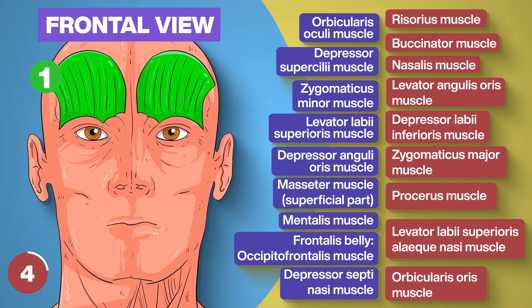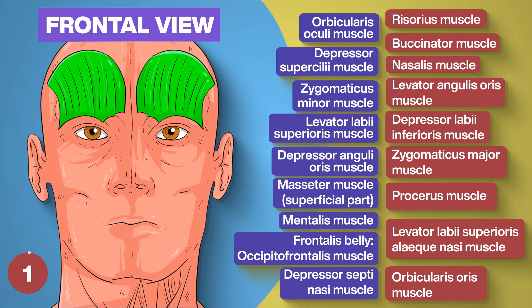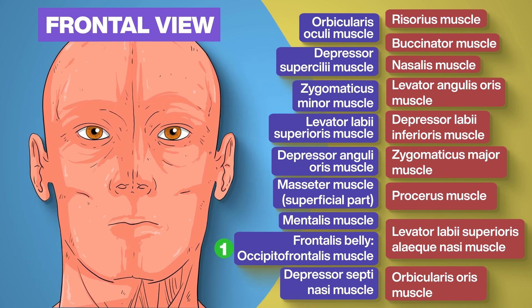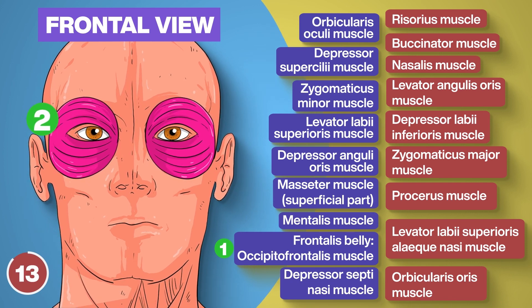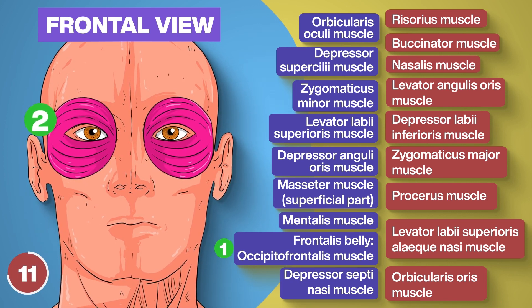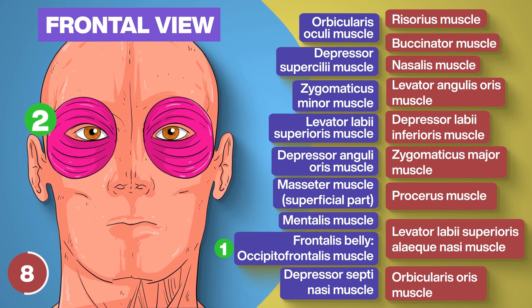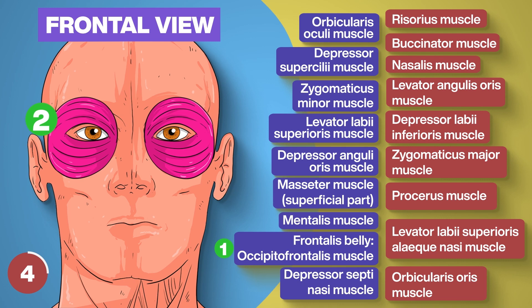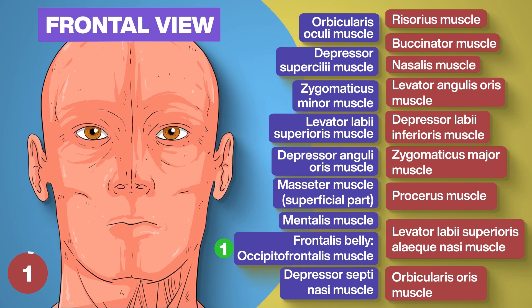Number 1: Frontalis belly of the occipitofrontalis muscle. Number 2: Orbicularis oculi muscle.